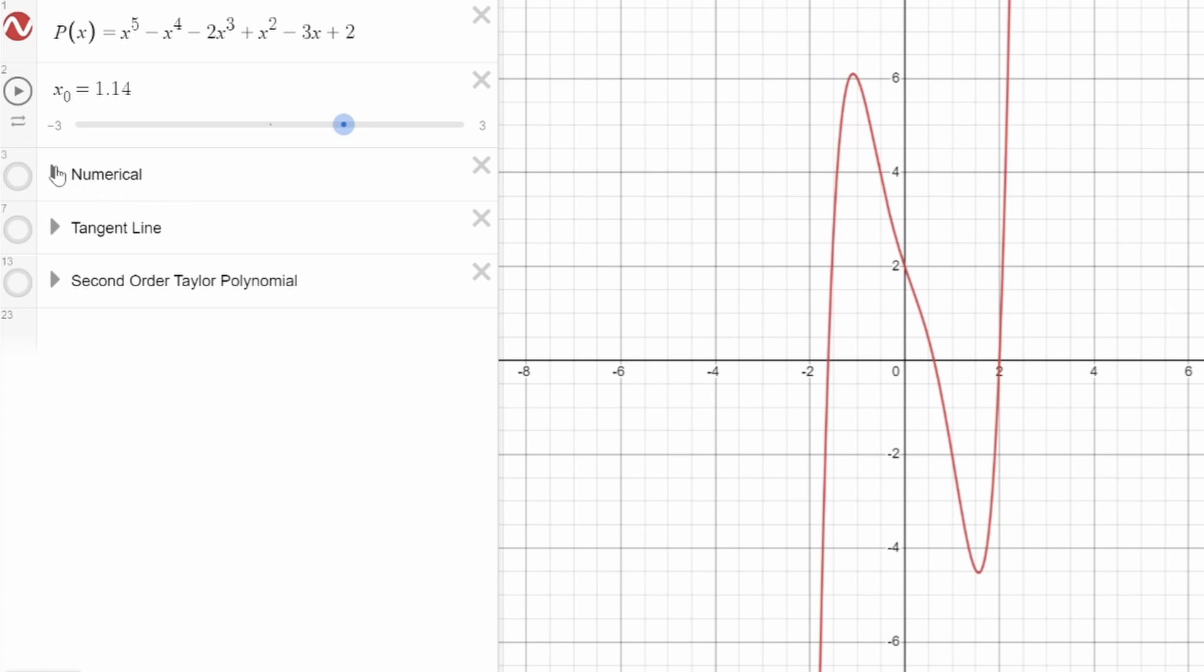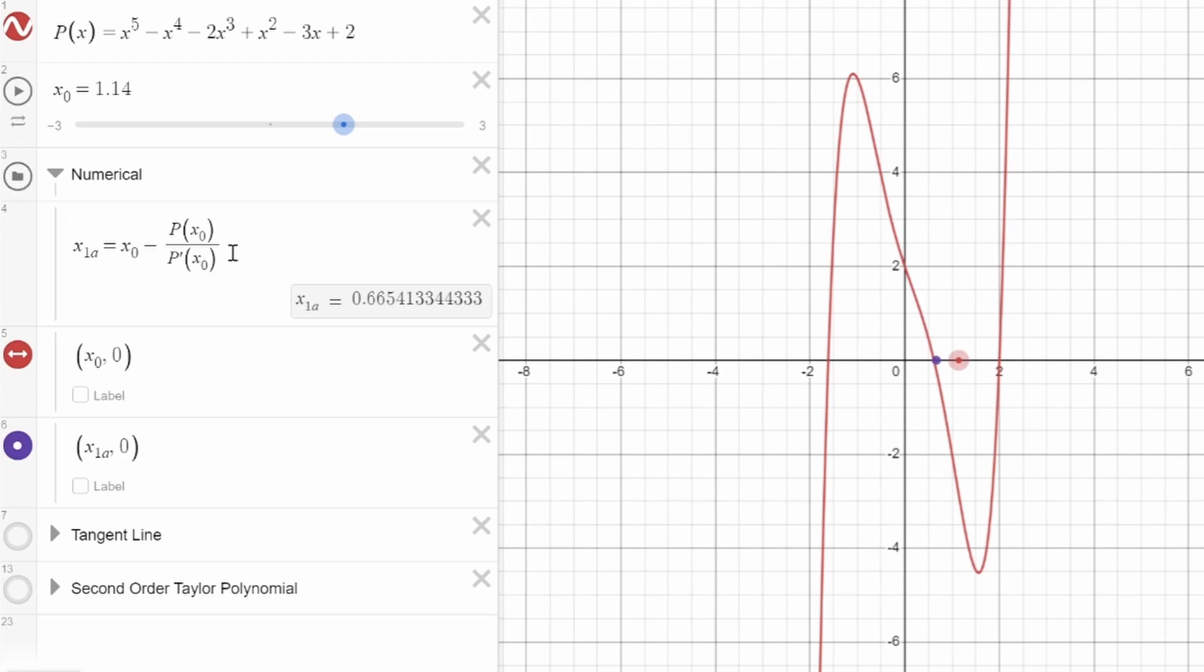First, the basics. The way that Newton's method works is by using this single formula. What you do is input an initial guess value for what you think could be one of the roots of the polynomial, which in this case is represented by the slider called x0 and also this red dot on the graph.